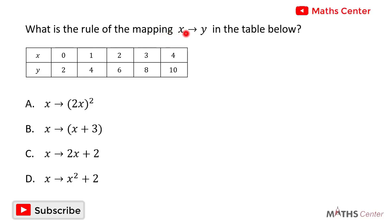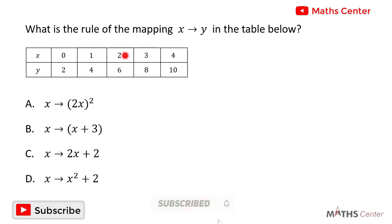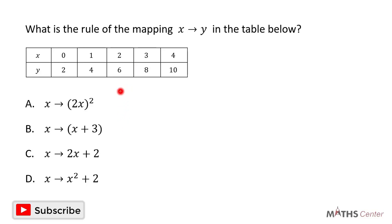What is the rule of the mapping x maps to y in the table below? In the table we have: when x is 0, y is 2; when x is 1, y is 4; when x is 2, y is 6; when x is 3, y is 8; and when x is 4, y is 10. This is a multiple choice question, so we will solve it and then pick the correct option.